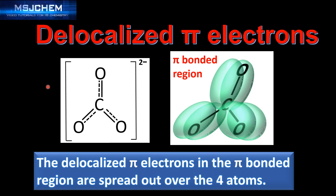Next we look at the delocalized pi electrons in the carbonate ion. The delocalized pi electrons in the carbonate ion occupy pi bonded regions — one above and one below the plane of the molecule. The delocalized pi electrons in the pi bonded region are spread out over the four atoms. They are not localized to any bonding position; they are delocalized, which is a feature of the molecular orbital theory of bonding.